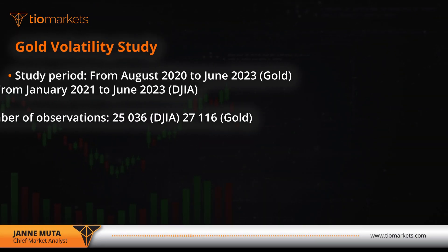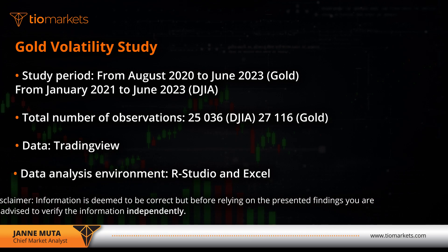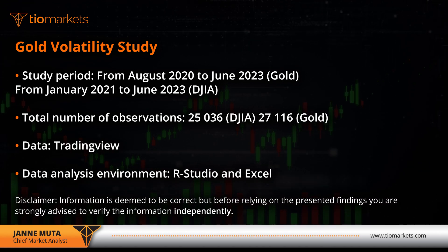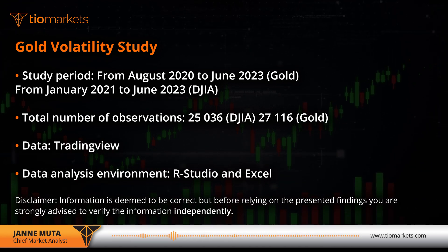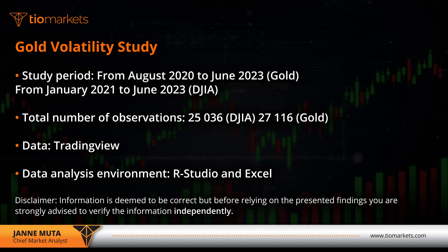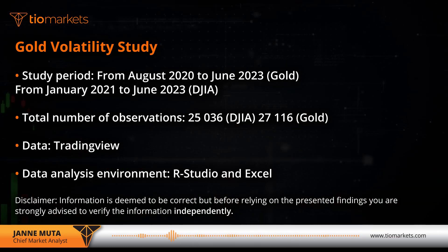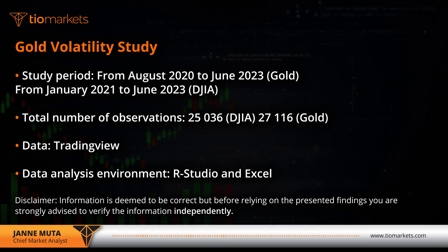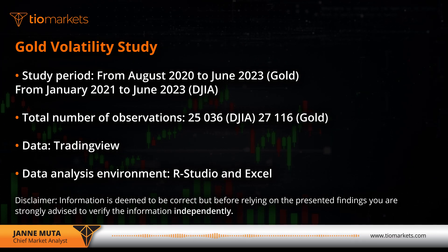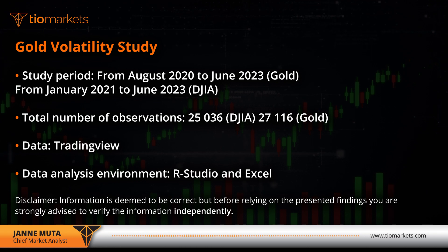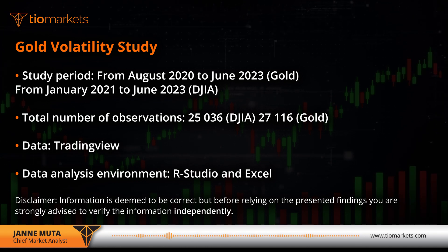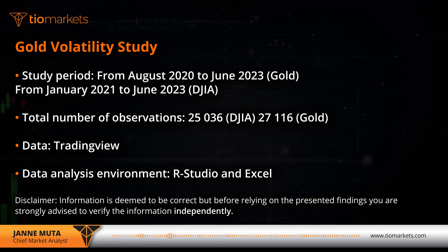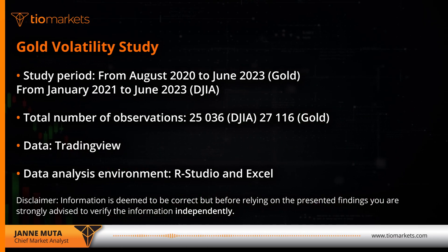Let me introduce you to the data. The study period for Gold was from August 2020 to June 2023, and for Dow Jones from January 2021 to June 2023. The data is from TradingView — I was using all the data available in the 15-minute time frame — and I made the analysis in RStudio and Excel.